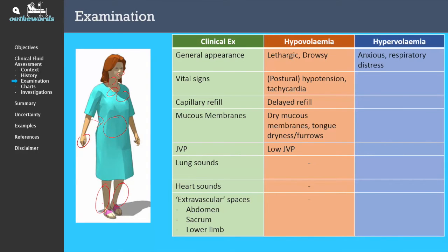In hypervolemia, patients may appear anxious or in respiratory distress. They may have decreased oxygen saturation, a high respiratory rate, and may even be hypertensive in the early stages of APO. The hypertension is due to an adrenergic response to acute pulmonary edema. There are some cases where patients may be in APO and hypotensive, and this has a worse outcome. In terms of capillary refill and mucous membranes, they are generally unremarkable. The JVP might be high, and in the lung sounds you might hear crepitations and evidence of pleural effusion.